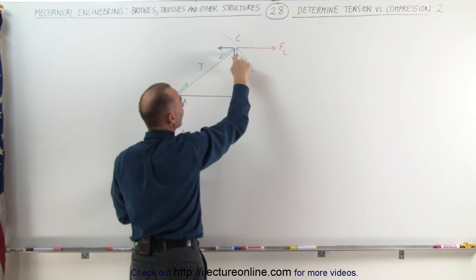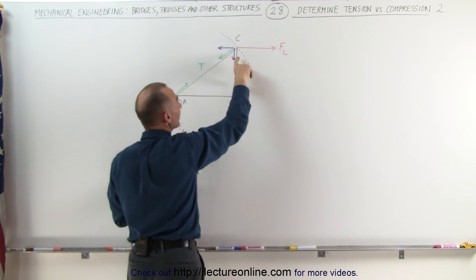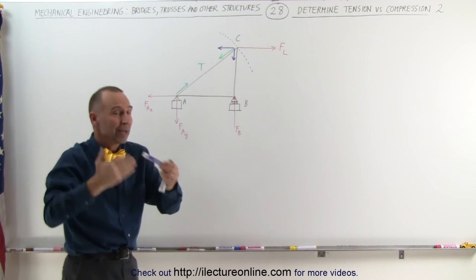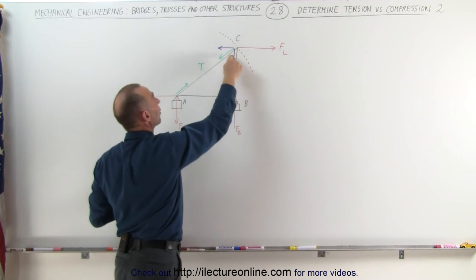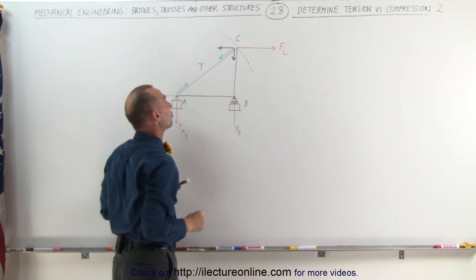This can only be compensated for by this member right here, which means that this member must be under compression because there must be a reactionary force pushing against the vertical component of the tension of that member.